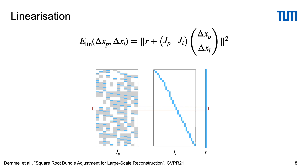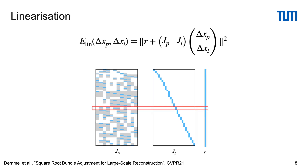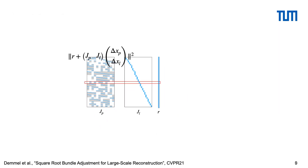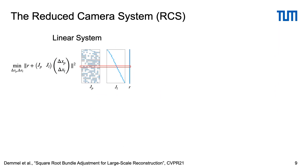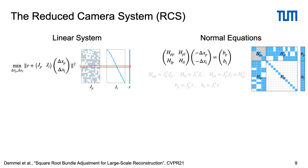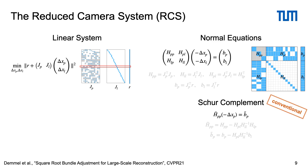Here, the red rectangle marks the rows of a single landmark. Conventionally, solving this linear system is done by forming normal equations. The block diagonal structure of the landmark Hessian HLL allows us to use the Schur complement to eliminate landmark variables and initially solve only for cameras with a much smaller reduced camera system.